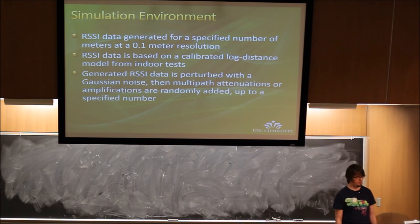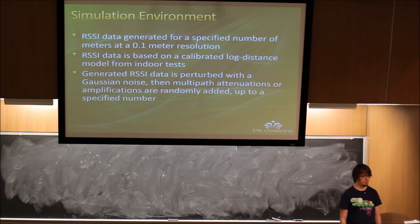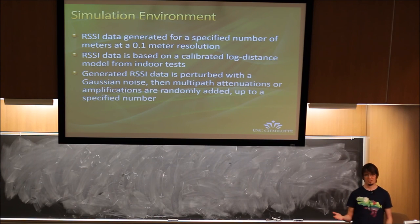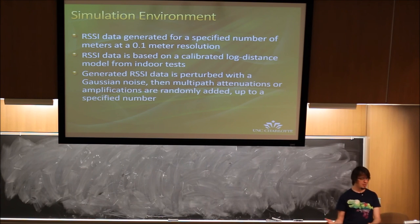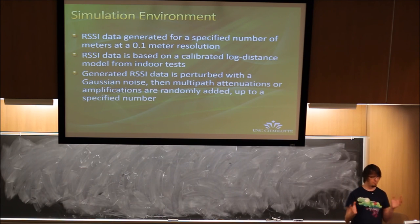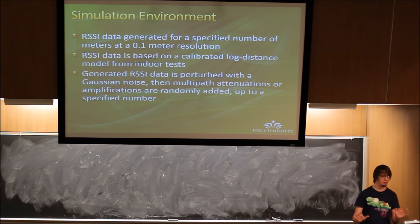For the simulation environment, in MATLAB we generated RSSI data for a certain number of meters at 0.1-meter resolution. This RSSI data is based on a calibrated log distance model from actual indoor tests — we went around several hallways, took measurements at many meters away, fit a model, then used that model in MATLAB to generate synthetic RSSI data. This data was perturbed with regular white noise and then injected with multipath effects — random spikes that jut up and down unexpectedly to totally ruin distance estimation.